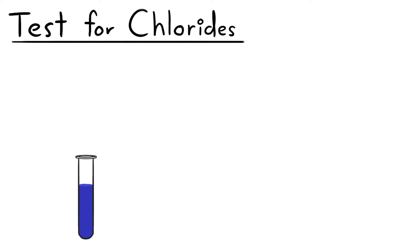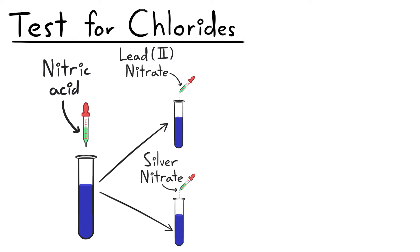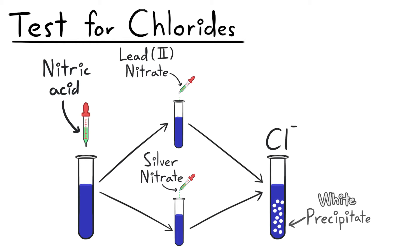To test for chlorides, add nitric acid and lead nitrate or silver nitrate. Either will produce white precipitates, proving that chloride ions exist in the tested chemicals.